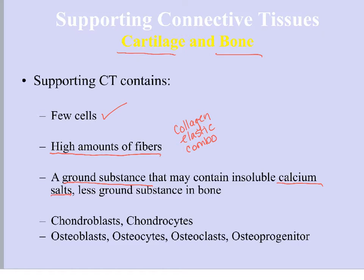The types of cells present in cartilage specifically — there are two main types of cells that are most prominent. The first are chondroblasts. Chondro means cartilage, and blast means immature.